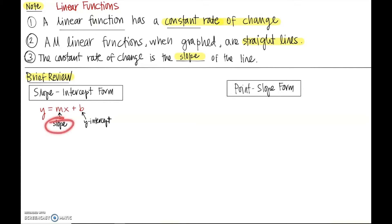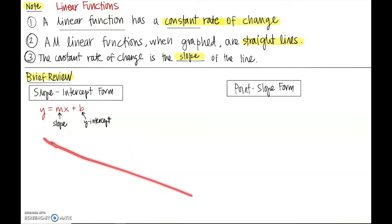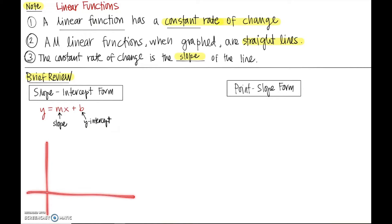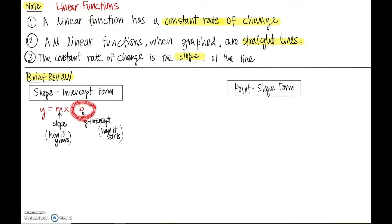Slope-intercept form is y = mx + b. The x and y stay as variables, m is some number representing your slope, and b is some number representing the y-intercept where the graph hits the vertical axis. I think of slope as how it grows — if you go one unit on your input values, how much does the output go up? And I think of the y-intercept as how it starts, because that's where the line hits when the input value is zero.